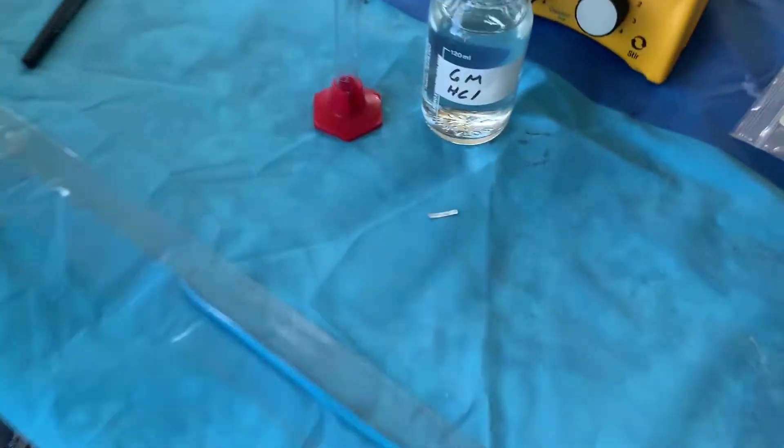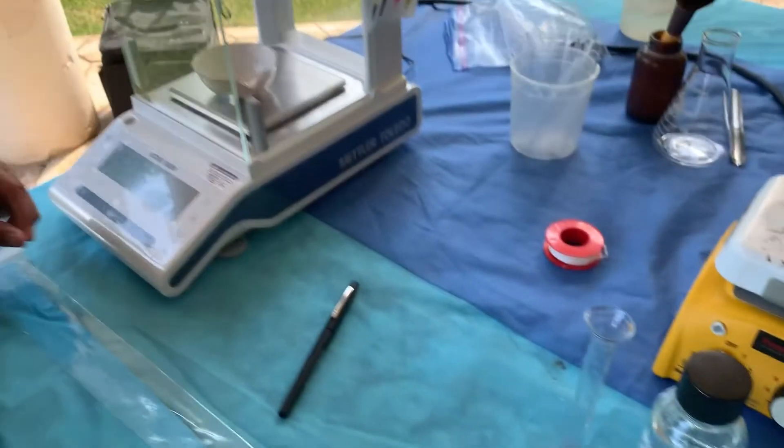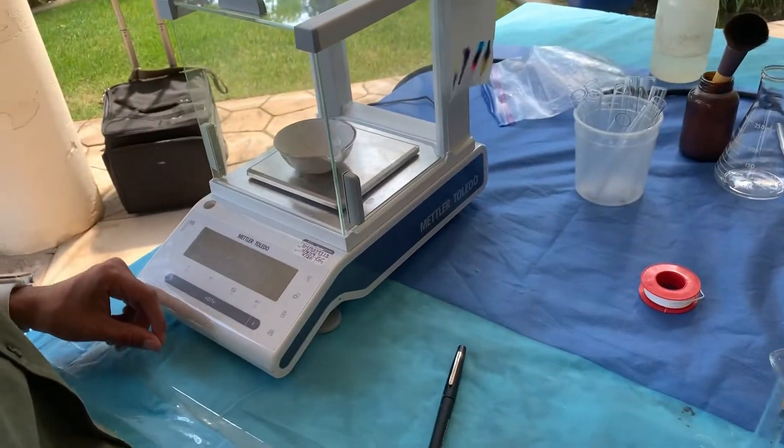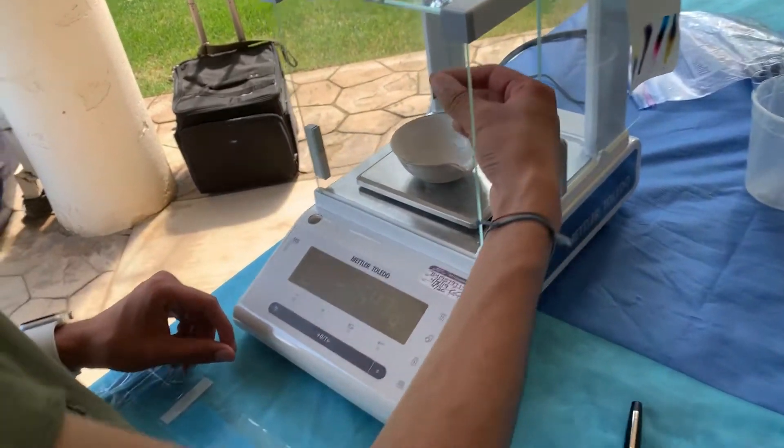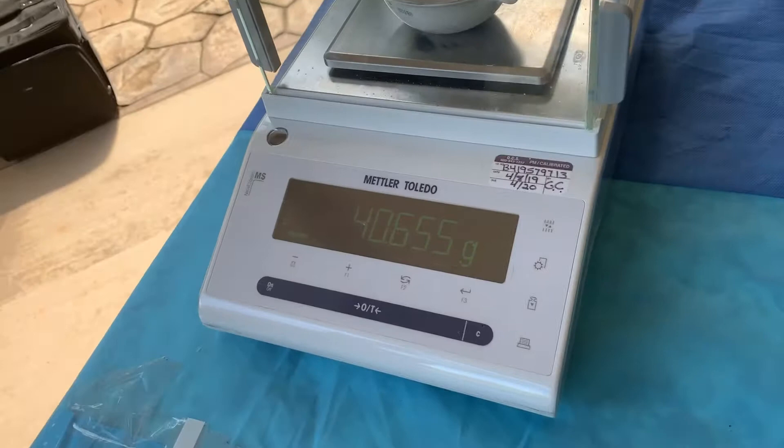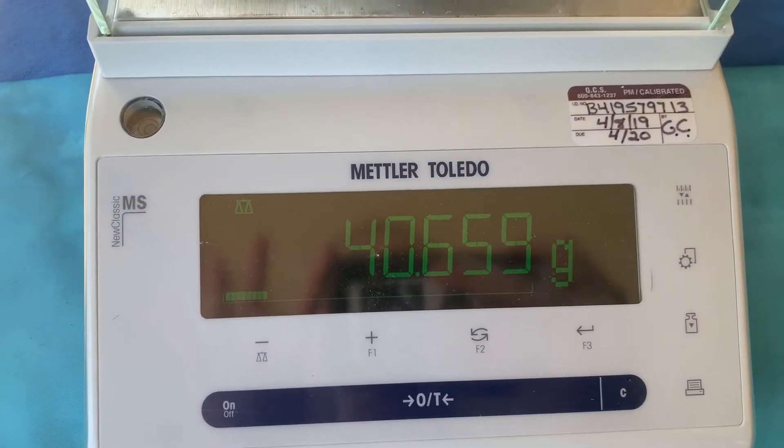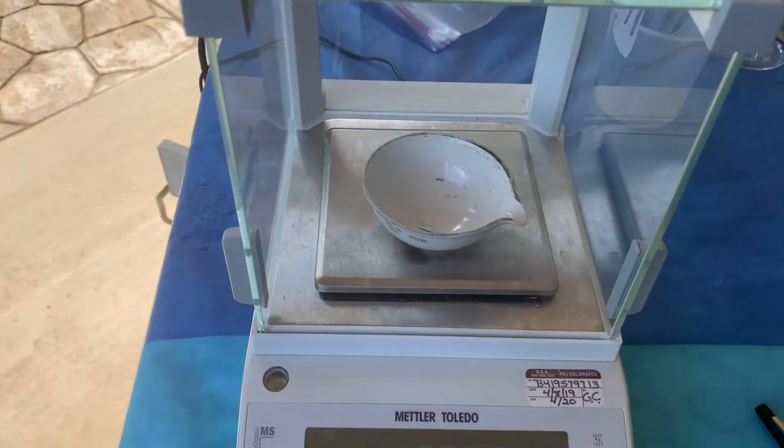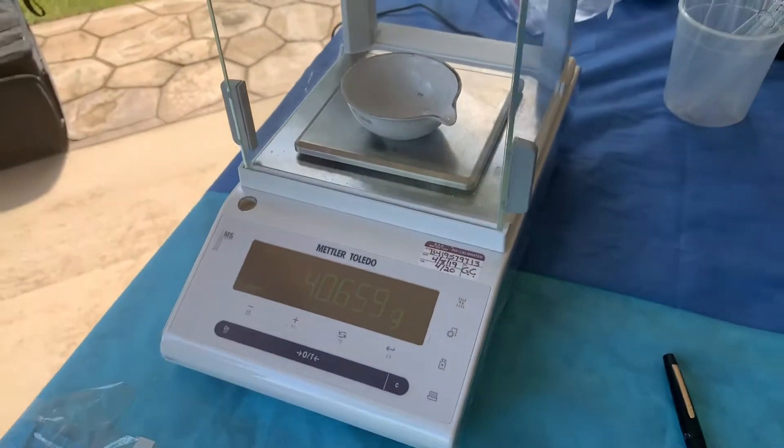Now we're going to take our piece of magnesium ribbon and place it inside the dish on the scale for the balance. And we're going to record that mass. And that is the mass of the evaporating dish and the magnesium ribbon.